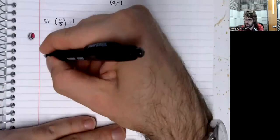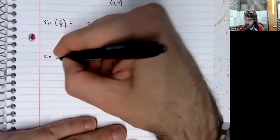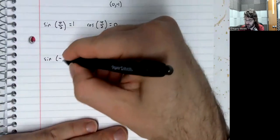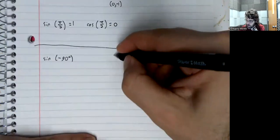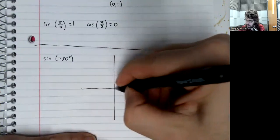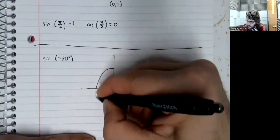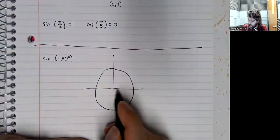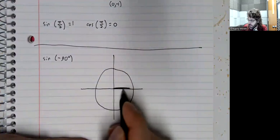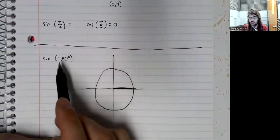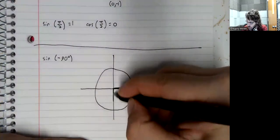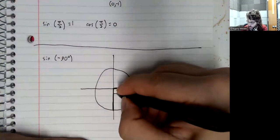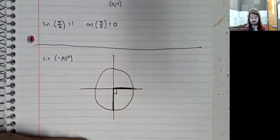The sine of negative 90 degrees. Draw the axis. Draw the unit circle. Here's the initial side of our angle. A negative angle means we're going clockwise, so the terminal side is down there.